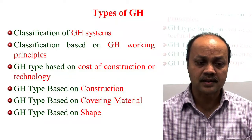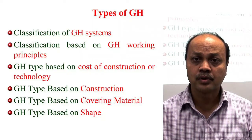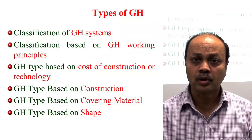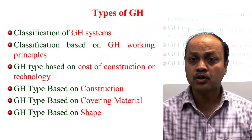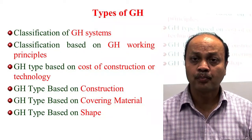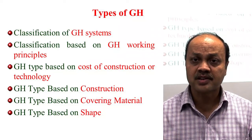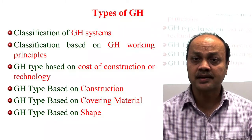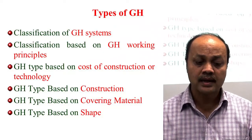The first classification is based on its system — how we are using the greenhouse, for which purpose: for drying, cultivation, or heating. Second is the working principle — how the greenhouse is working. Third is the cost of construction, which affects profitability. Fourth is the construction material. Fifth is the covering or cladding material. In any greenhouse, three things are very important: the structure, the cladding material, and the gadgets required to control the environment inside.